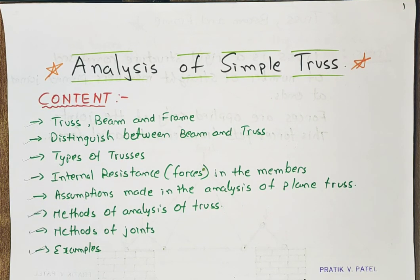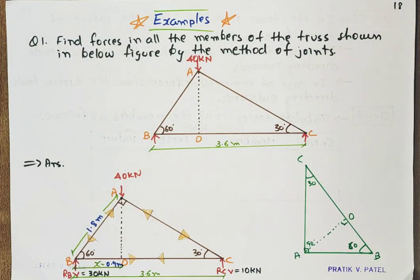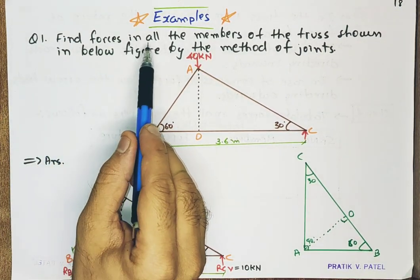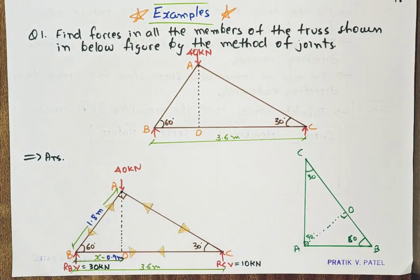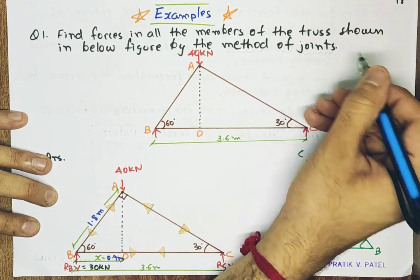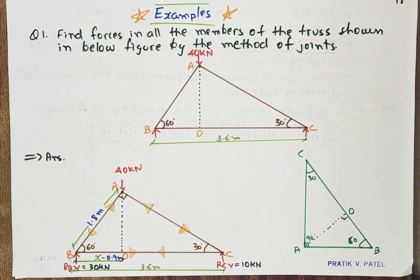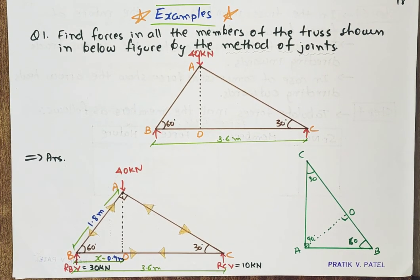Hello friends, in the 6th lecture of the analysis of a simple truss, we will solve examples. In this lecture we will solve example number 1: find the force in all the members of the truss shown below by the method of joints. We are using the method of joints here, and later on we will be doing the graphical method. This method is very important and will require huge concentration, so don't miss any part of this lecture.